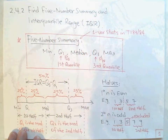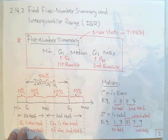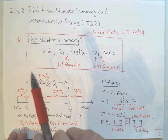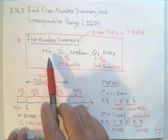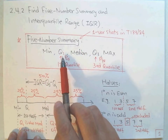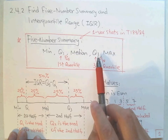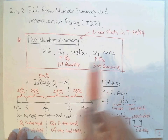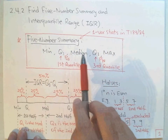What is the five-number summary? It is a basic description of the data consisting of five numbers. The first number is the minimum, the second is Q1, the third is the median, the fourth is Q3, and the fifth is the maximum. The data should be ordered from the minimum to the maximum.